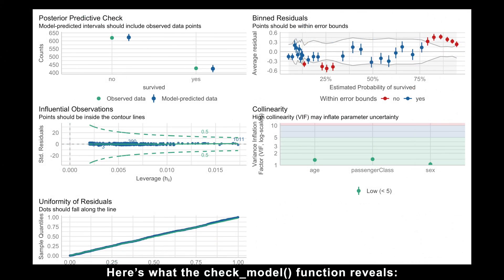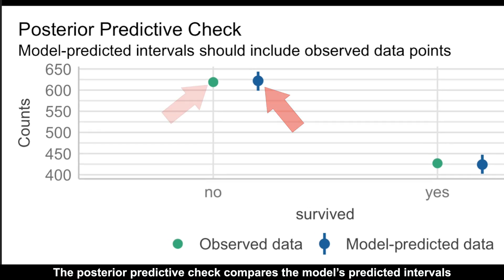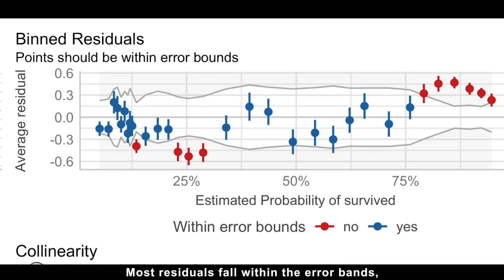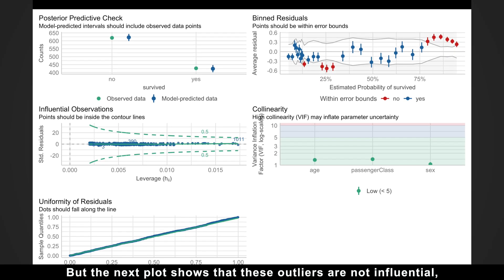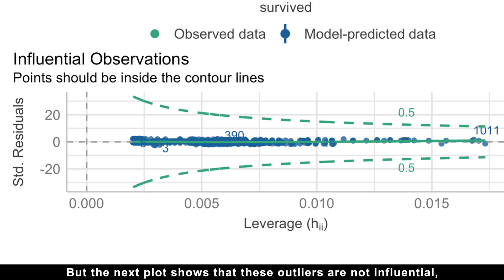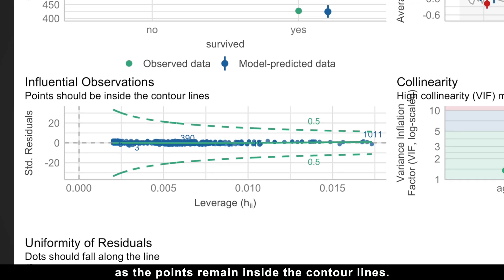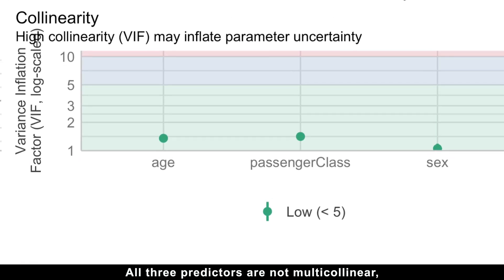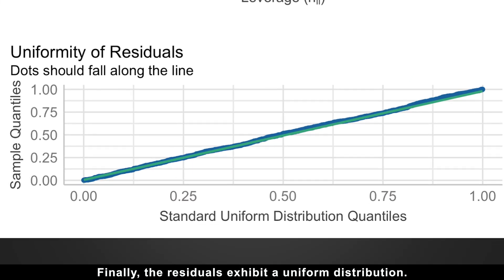Here's what the check_model function reveals. The posterior predictive check compares the model's predicted intervals with the actual observed values, helping us assess how well the model fits the data. Most residuals fall within the error bands, with only a few potential outliers shown in red. But the next plot shows that these outliers are not influential, as the points remain inside the contour lines. All three predictors are not multicollinear, as the variation inflation factor stays below 5. Finally, the residuals exhibit a uniform distribution.